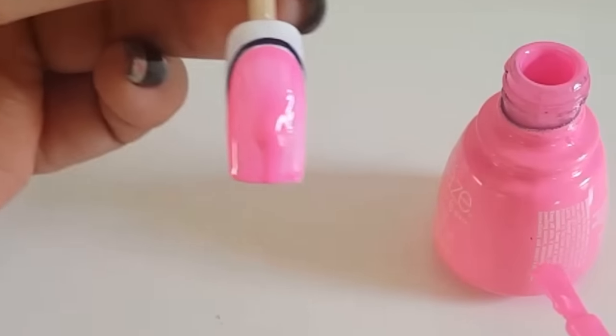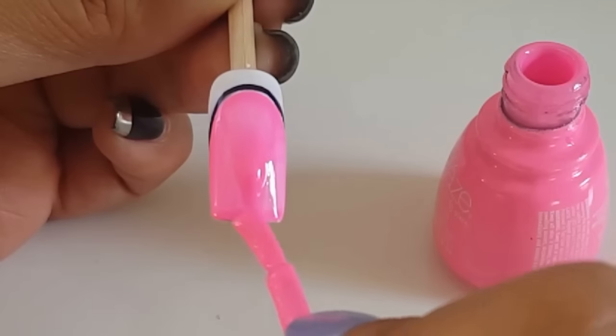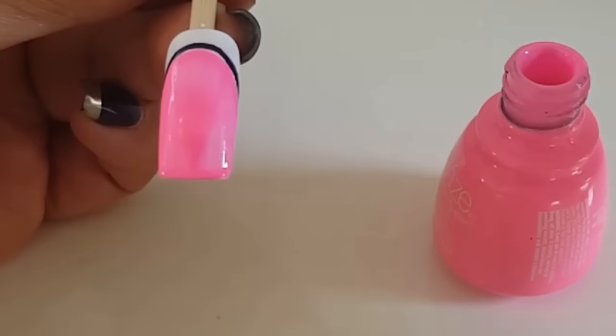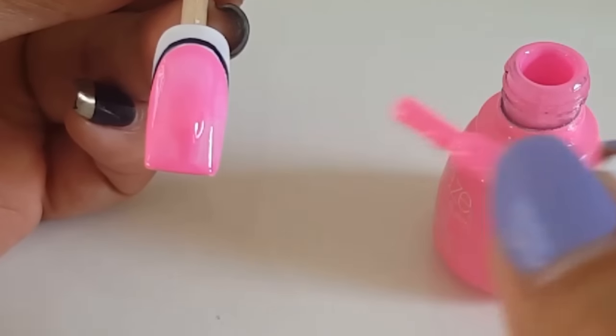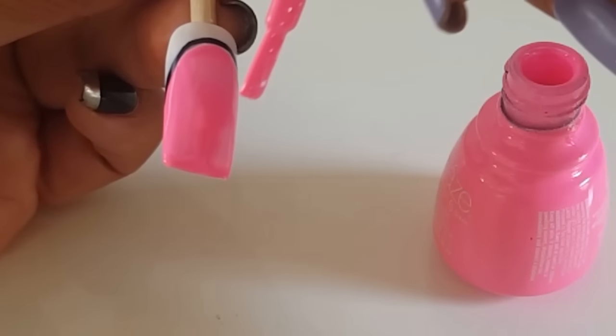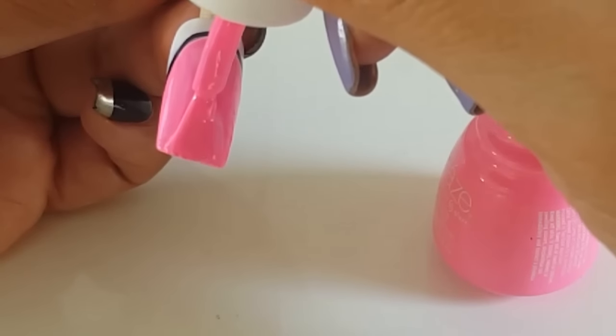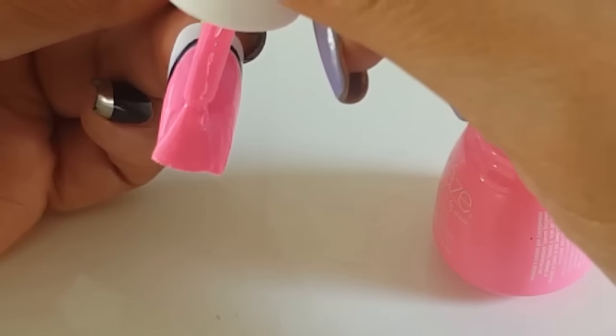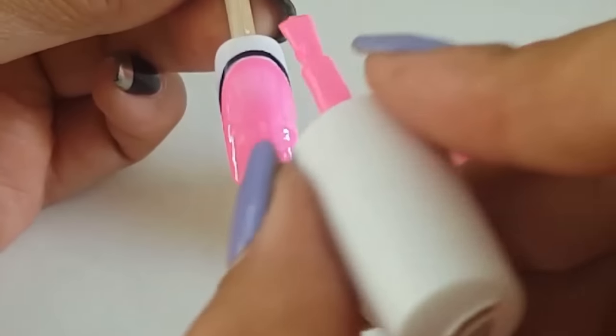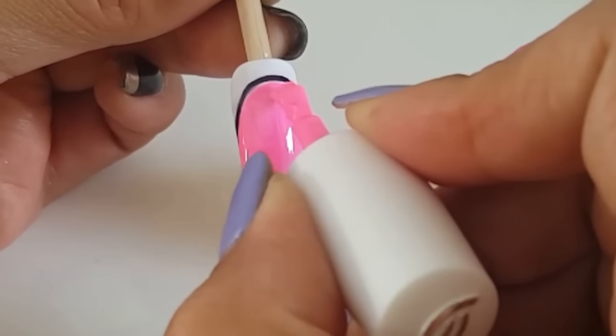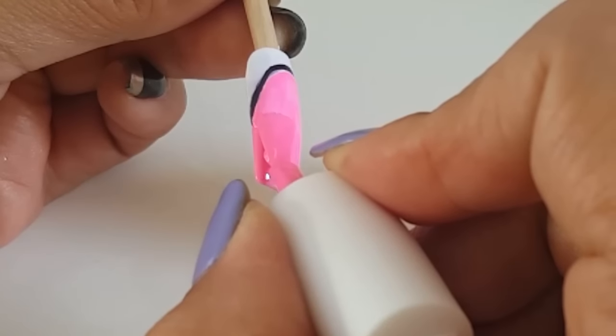Now you want to cap your free edge. This is going to give you longer wear. Long nails you do it just like that, like you see most videos do. Super short nails, you can't really do that because you're going to get polish all over. So a tip is to turn your brush upside down and kind of do an up and down motion or a back and forth motion to really get the free edge capped. Now I'm just going to take a few strokes and wipe off any excess that is on there.